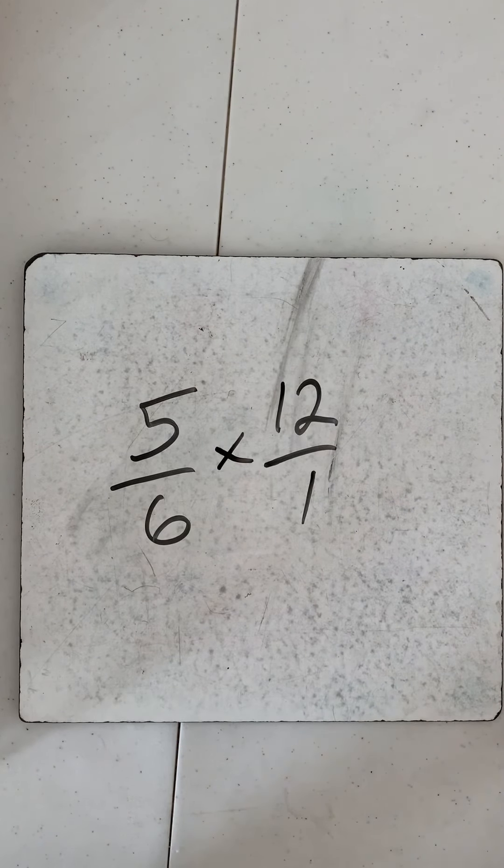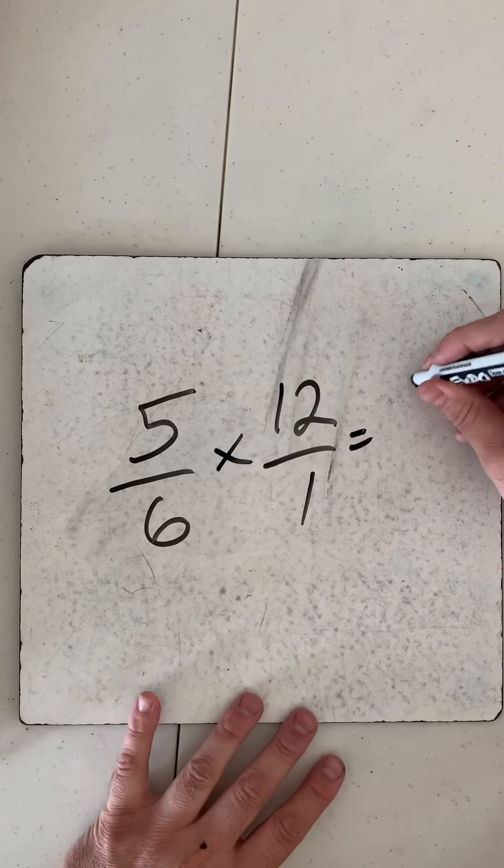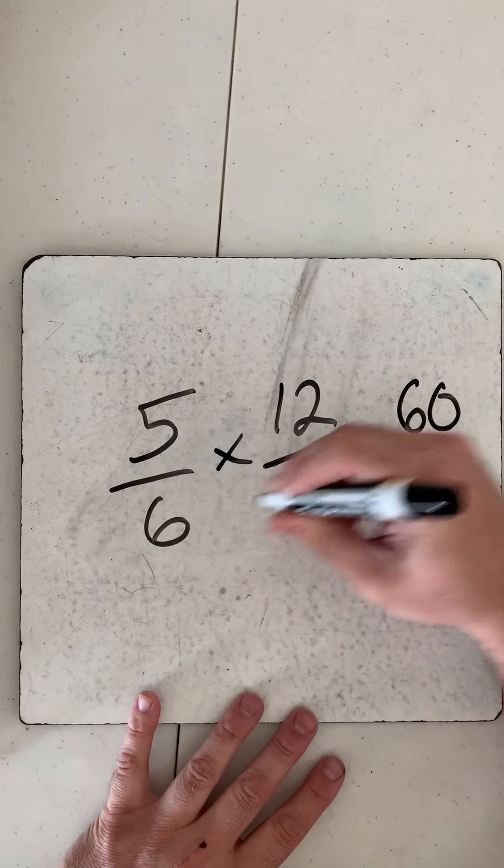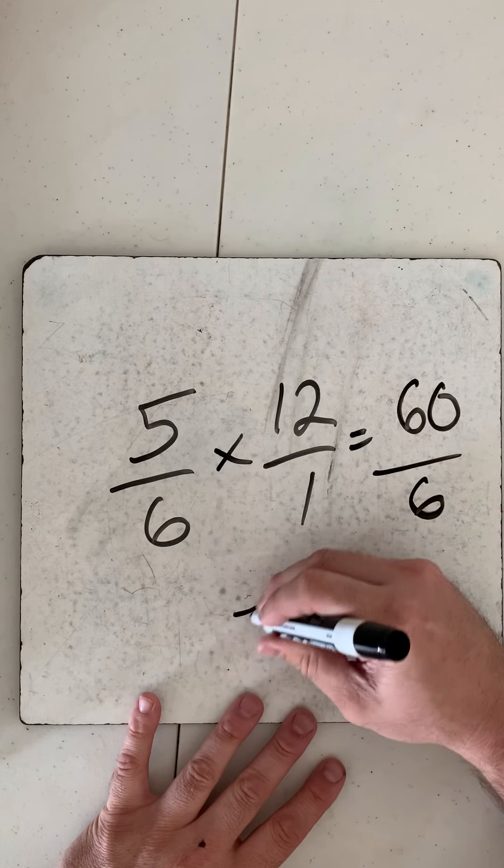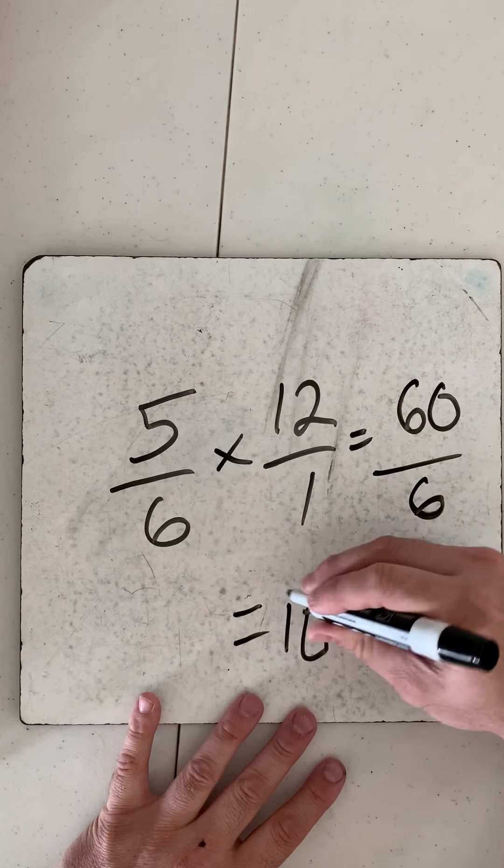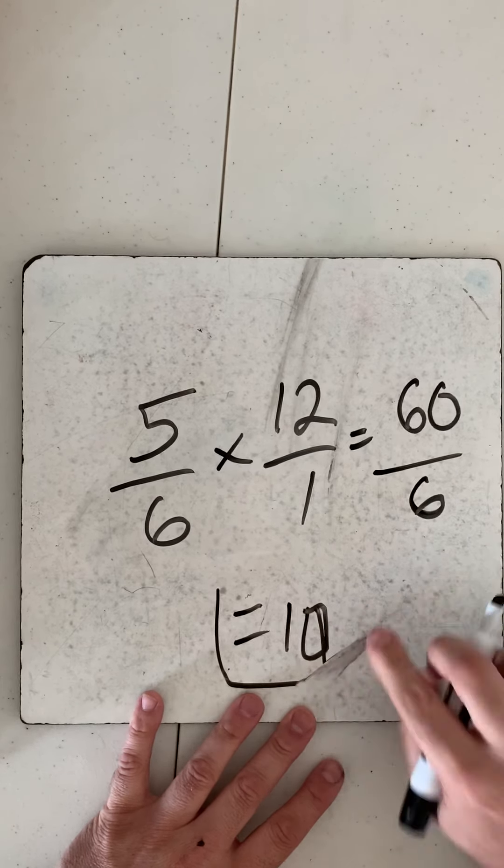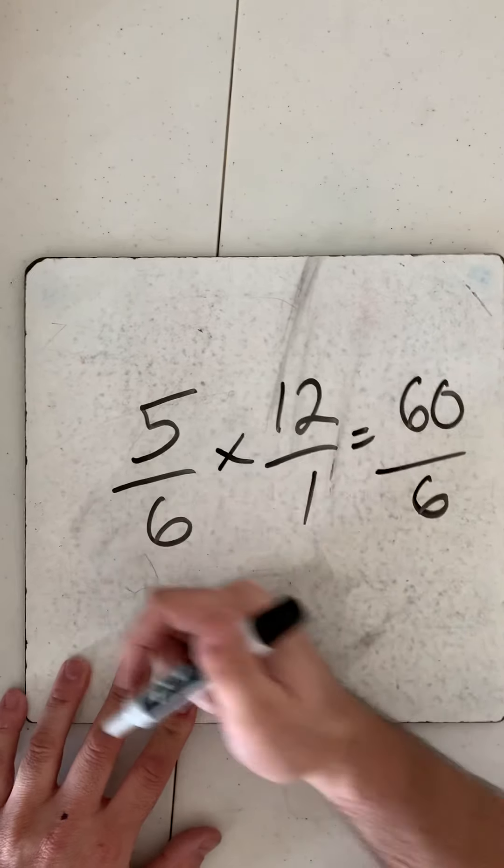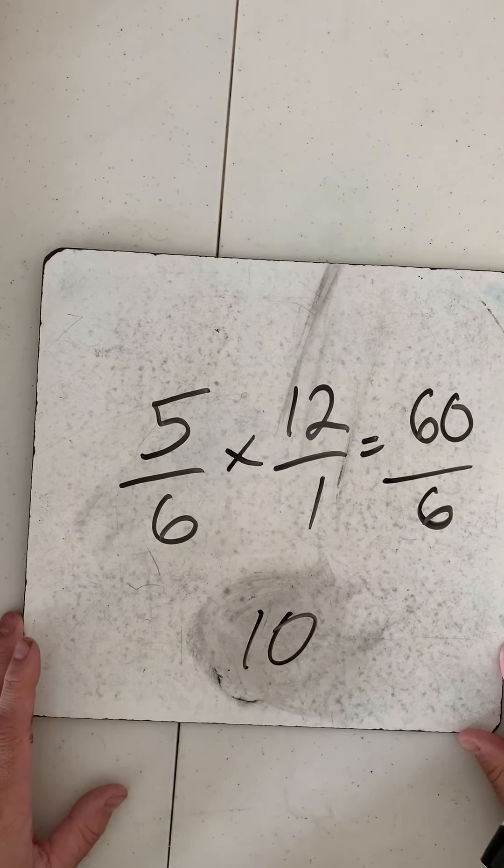Then I can take the GCF or I can multiply. This one looks simple so I know 12 times 5 is 60, and 6 times 1 is 6, so I know my answer is 10. The answer is 10.